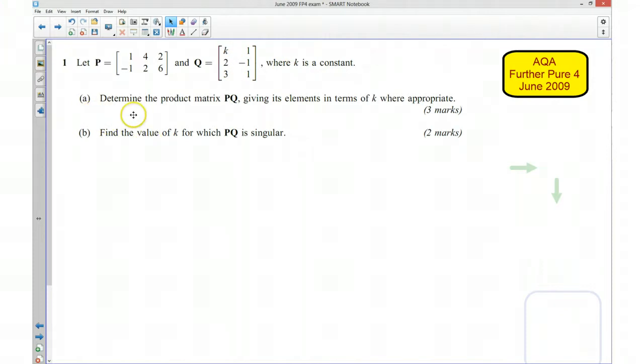For part A, we want to determine the product matrix PQ given its element in terms of k where appropriate. So we want to find the product of these two matrices. Now I'm going to start off by writing down what I'm going to do. So I've got the matrix PQ is what we're trying to find.